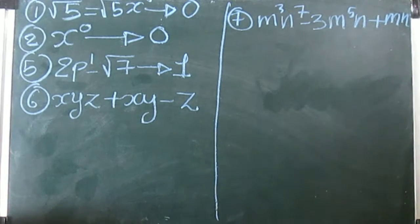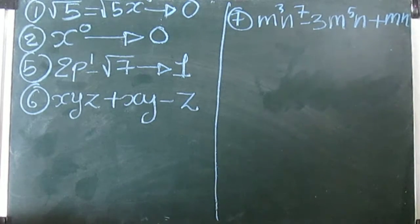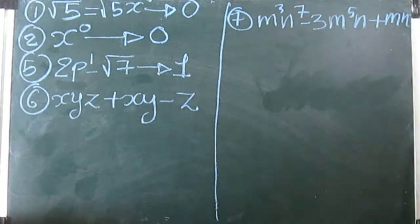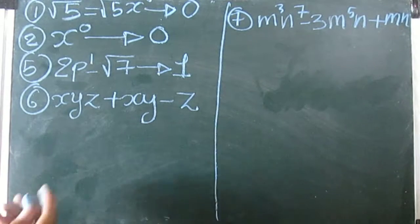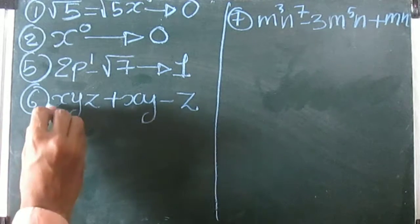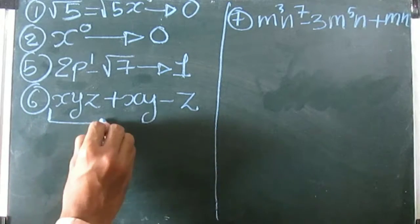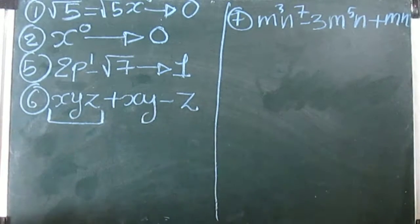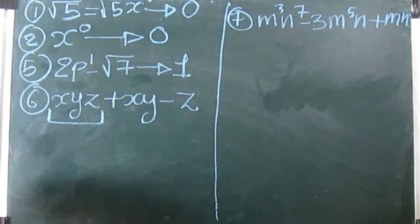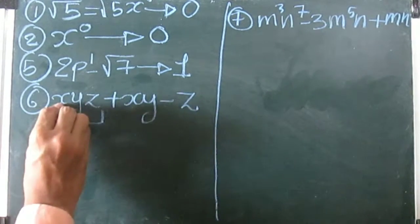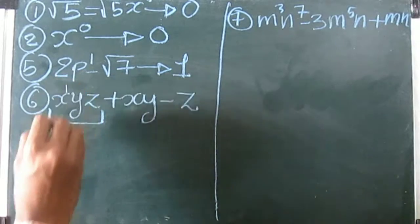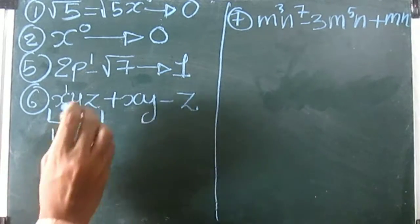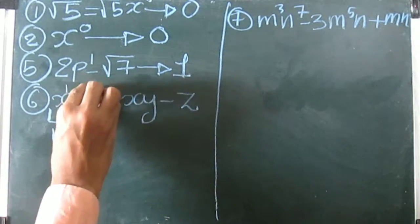Now we go for the sixth one — something interesting. They have asked us to write the degree. The degree is the highest power of the term. Looking at the first term: x has a power of one, y also has a power of one.